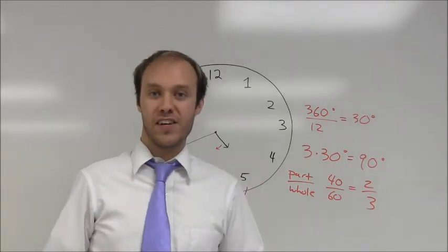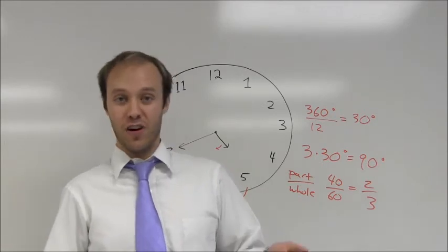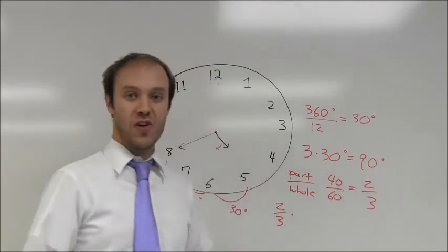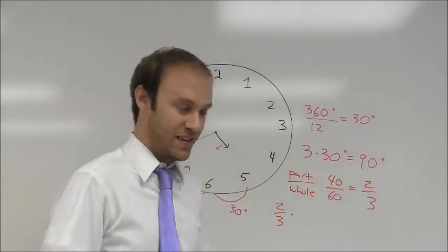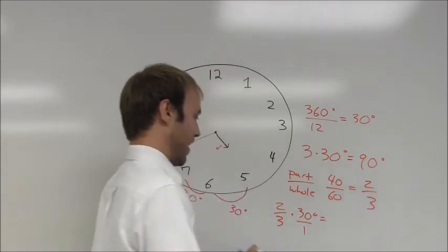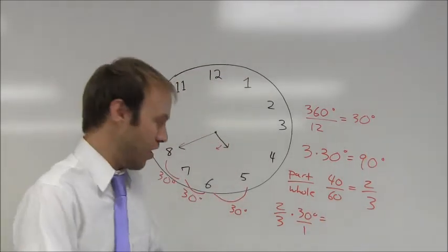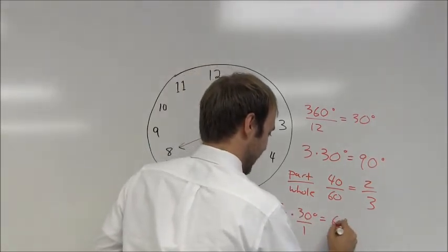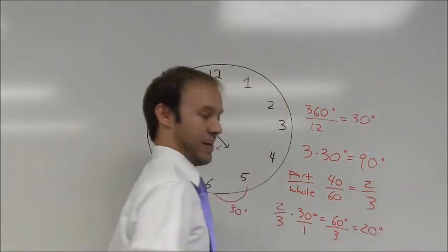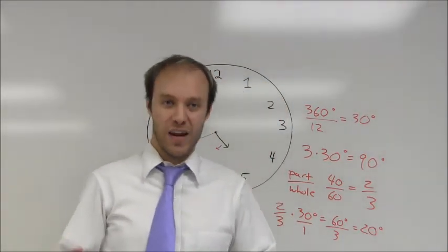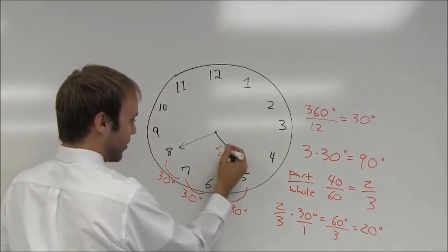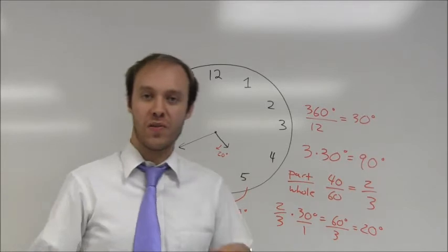Very simple calculation here. If you needed to turn it into a decimal by dividing it out, you could. But I'm going to do it with fraction multiplication because it's very simple. Two thirds of 30 degrees means I'm going to take two thirds times 30 degrees. Write that as a fraction over one. Two times 30 is 60 degrees. Three times one is three. I end up getting 20 degrees. Let's come back to the diagram and see what we have.